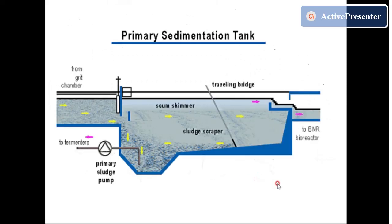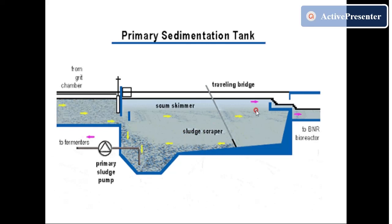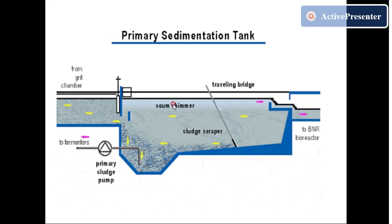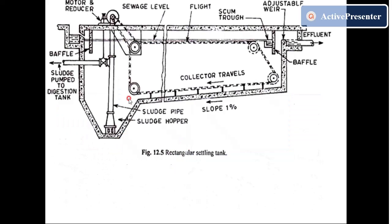Here you can see water coming from the grit chamber — which is essentially screening — moving slowly from inlet to outlet. As water moves, particles settle and are deposited into a small collection tank at the bottom. Floating matter, called scum, is removed by a scum skimmer. In the top view, this is a rectangular sedimentation tank. A chain arrangement collects deposited material and brings it to the sludge tank.